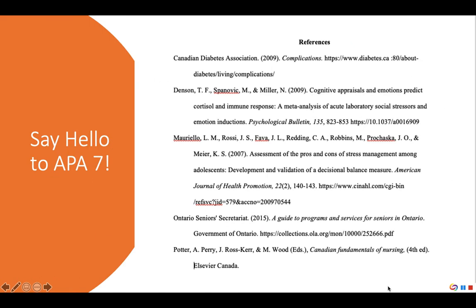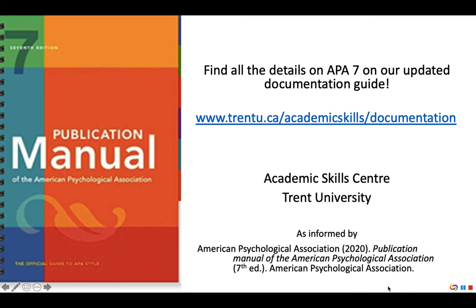And here we have our APA 7 properly formatted references page. This video has explained key changes in APA 7 for citations and references. For information on changes to language and formatting, see our video, Say Hello to APA 7, Part 2: Language and Formatting. For all the details on how to reference sources in APA or any of the major documentation styles, check out the Academic Skills Documentation Guide. You can also book a one-on-one appointment with an academic skills instructor to review your citations, references, and formatting. Thanks for listening — that's all for now.